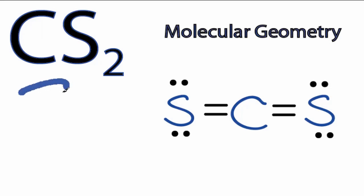For the molecular geometry for CS2, we'll first go to the Lewis structure. You can see that on either side of the carbon, there is a sulfur atom, and those are connected by double bonds.